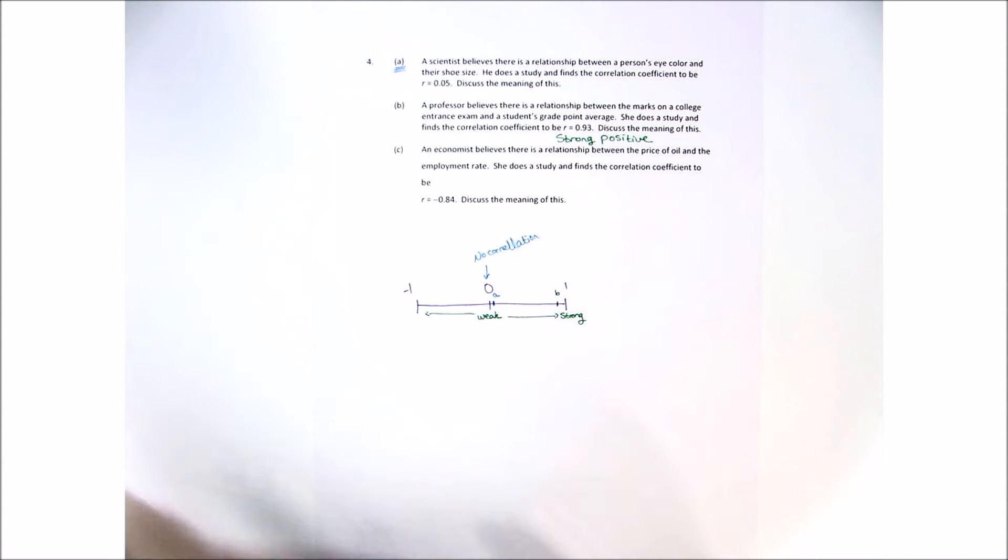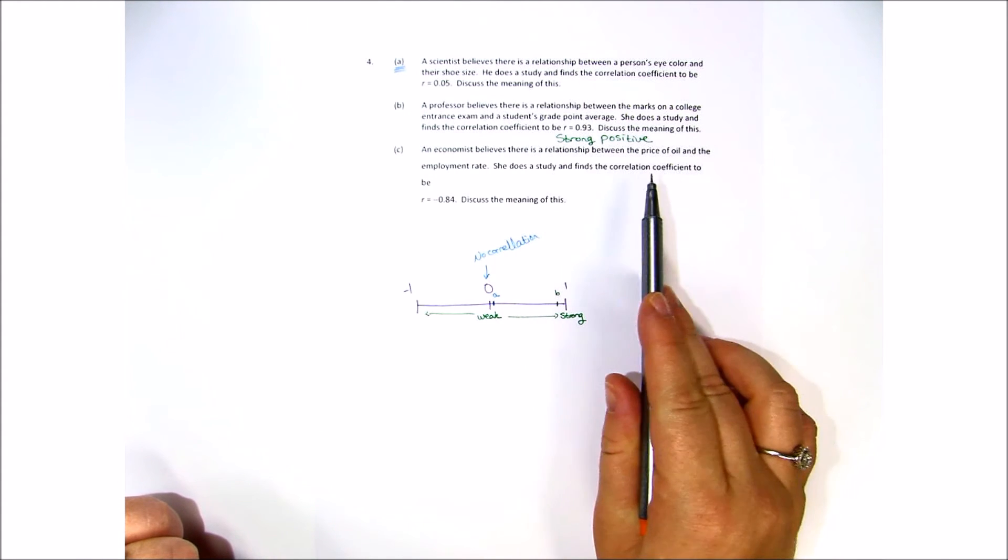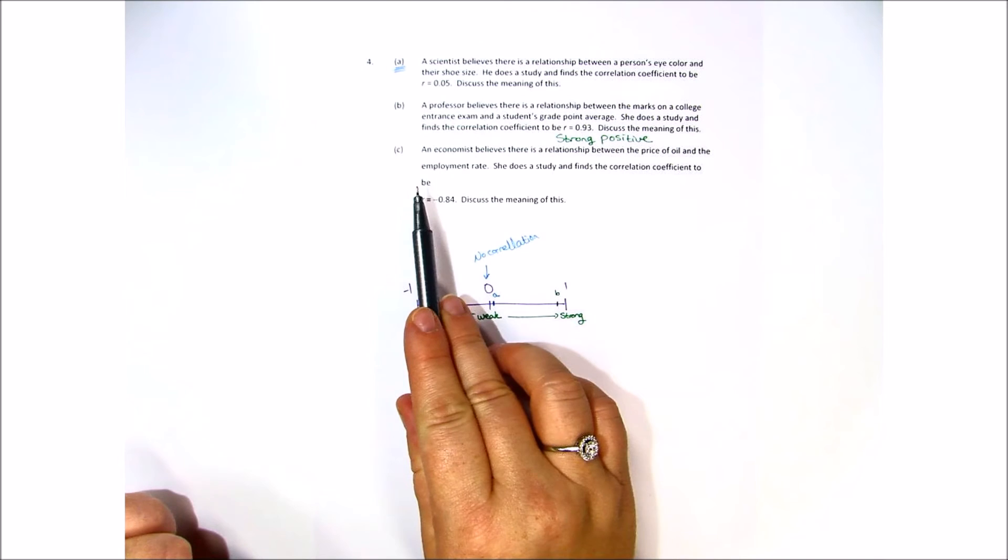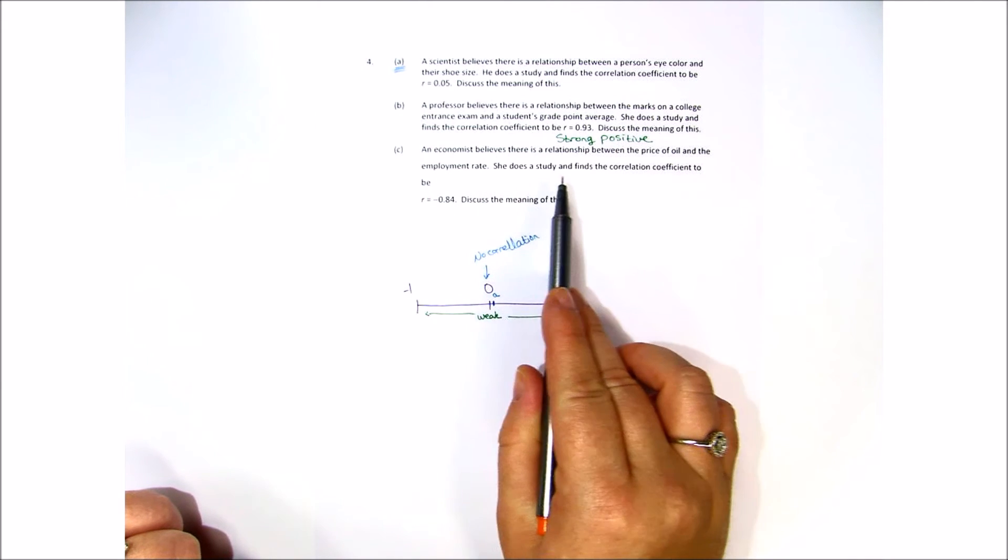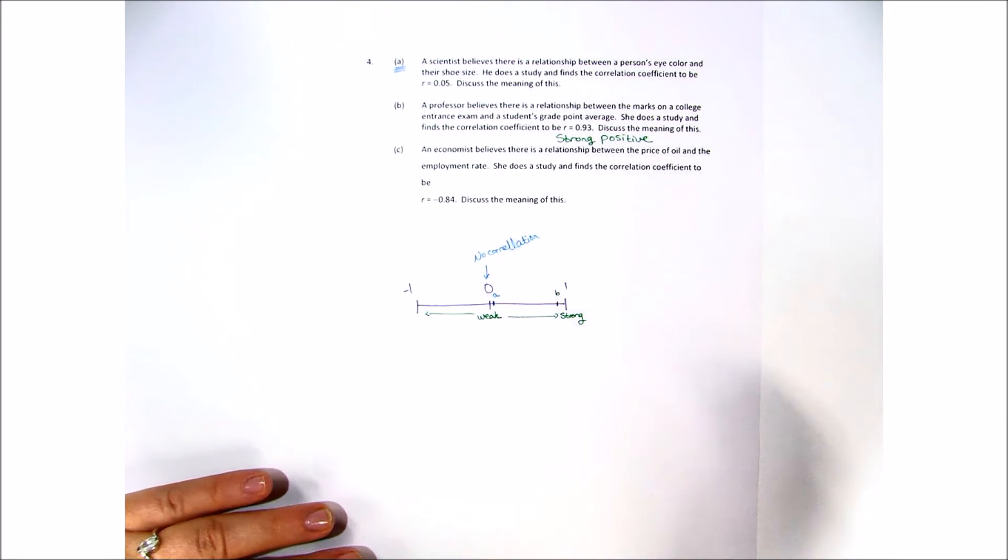Let's go ahead and look at C. An economist believes there is a relationship between the price of oil and the employment rate. She does a study and finds the correlation coefficient to be r equals negative 0.84.